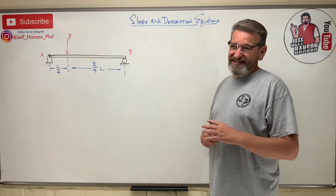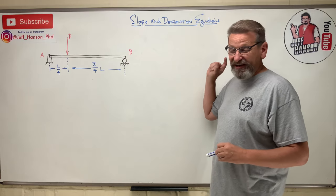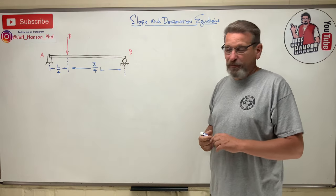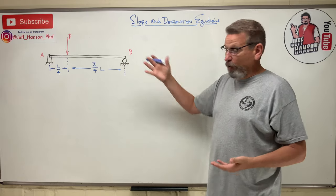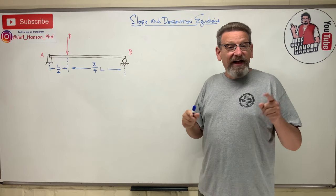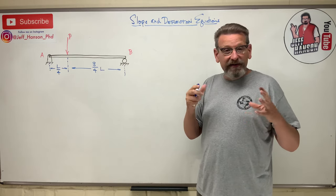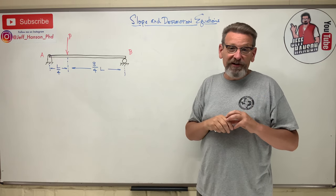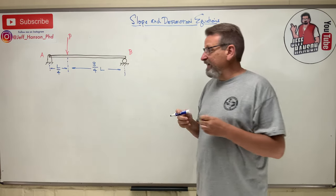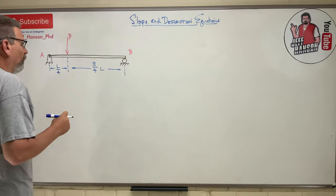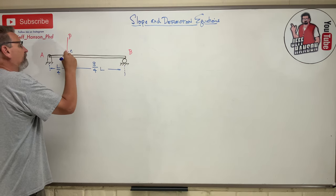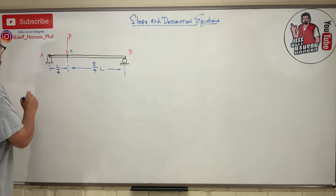Welcome back. In this solids video, we're talking about slope and deflection equations. This seems like the world's easiest problem — a beam with a force on it. This is related to the last lesson, which covered how beams deflect and how we can determine what the slope and deflection is at any point on a beam. Today we want to find the slope and deflection at a point we'll call point C, right under the load.